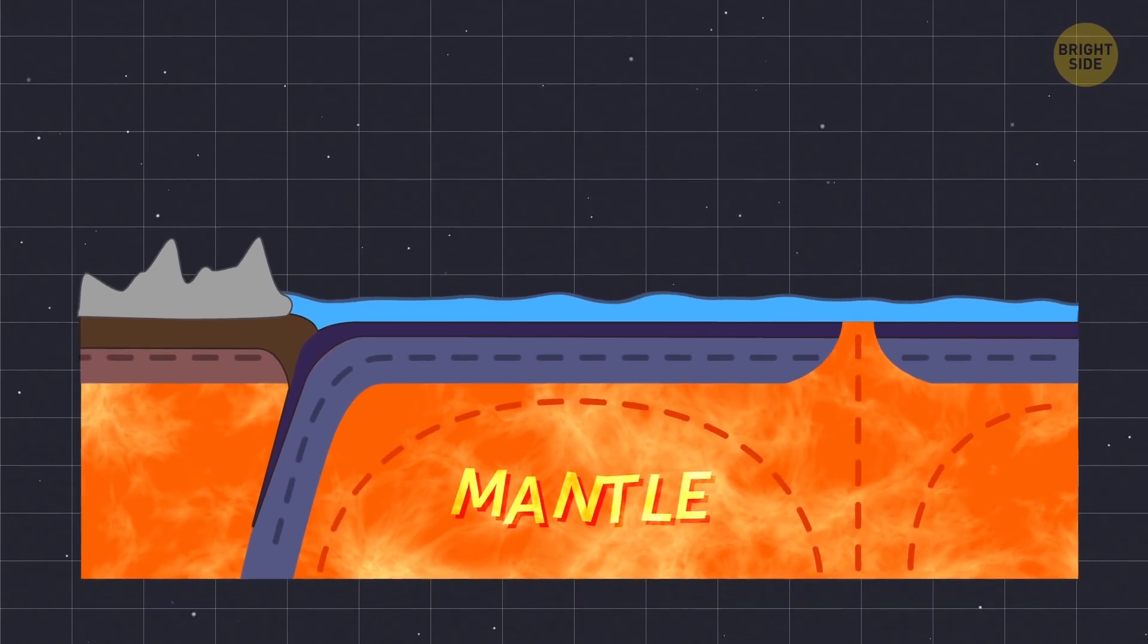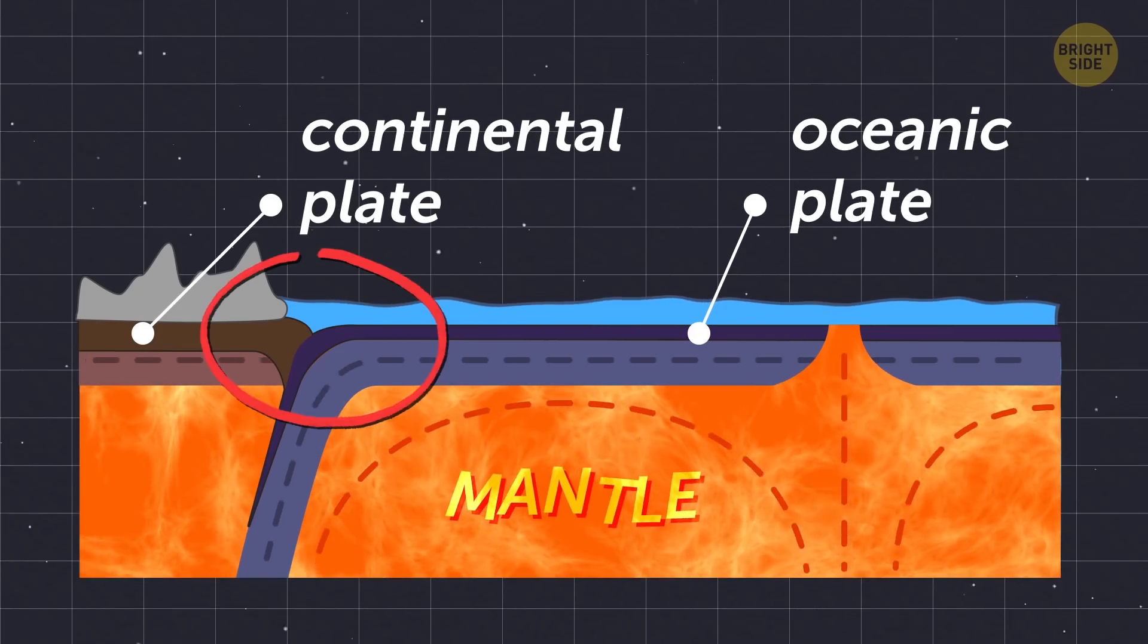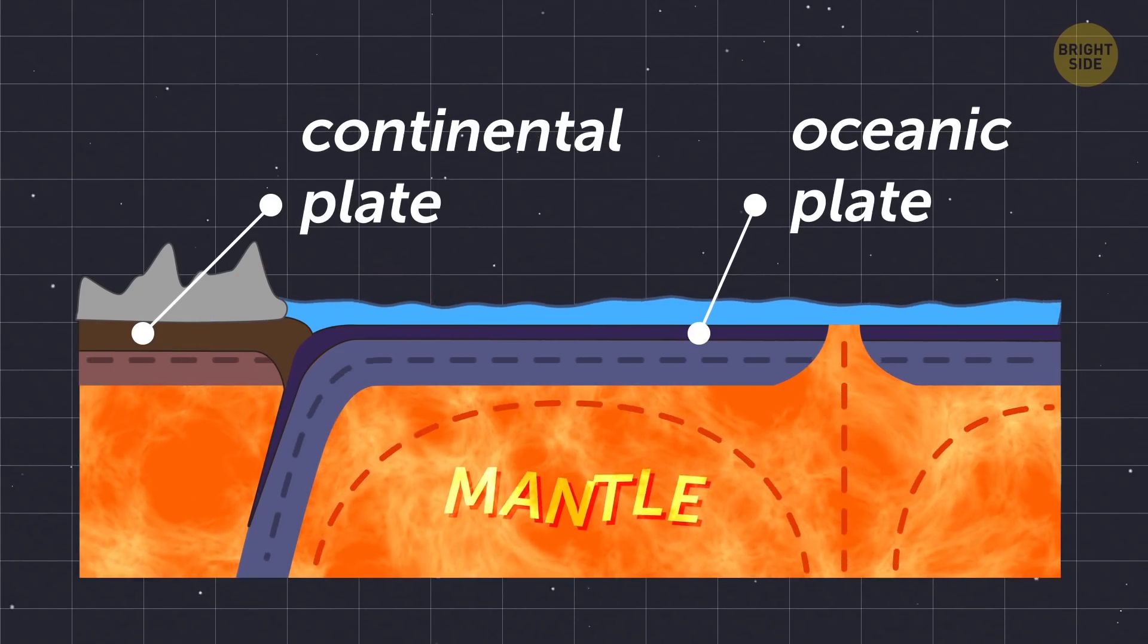Now, tectonic plates can either be both oceanic and continental, or they can be one of each type.